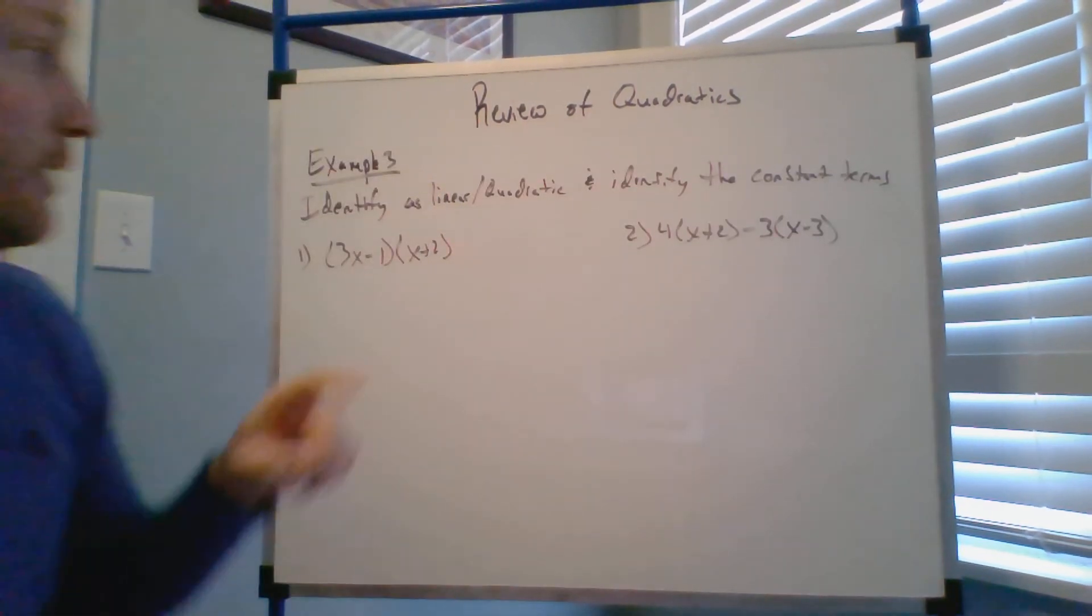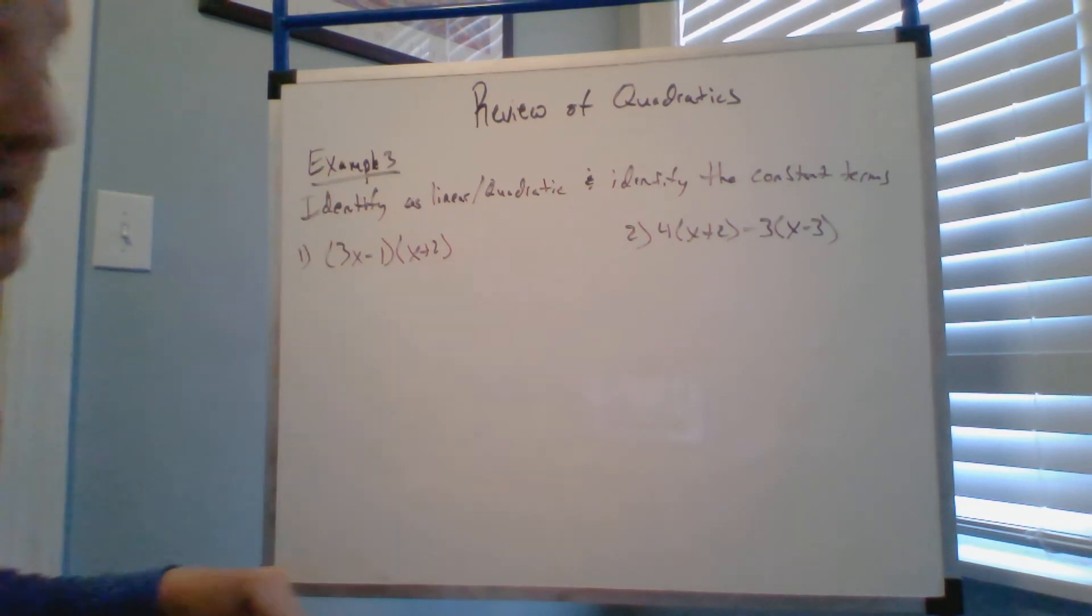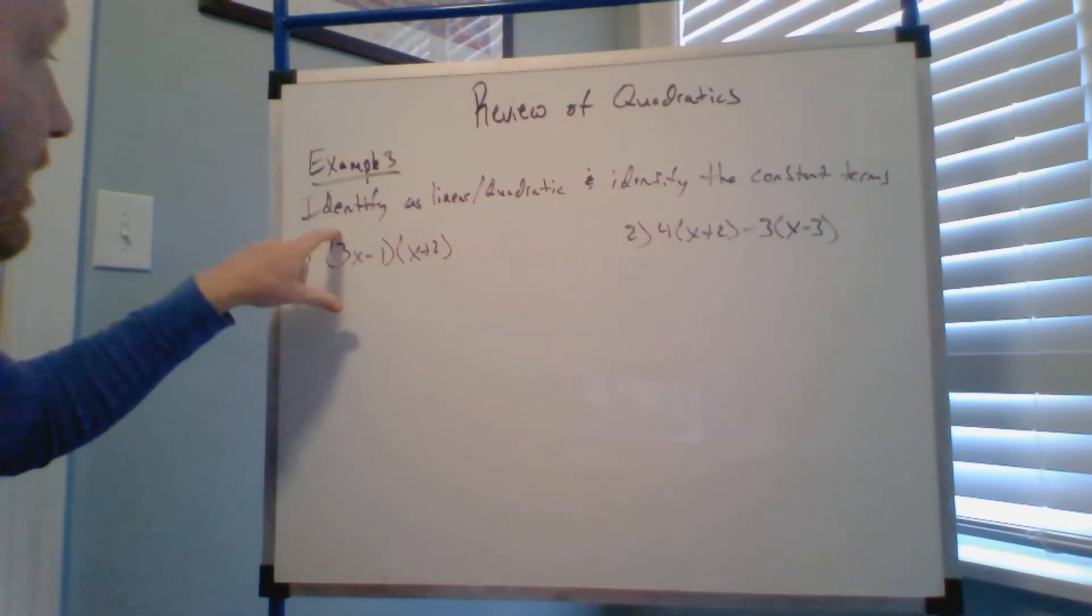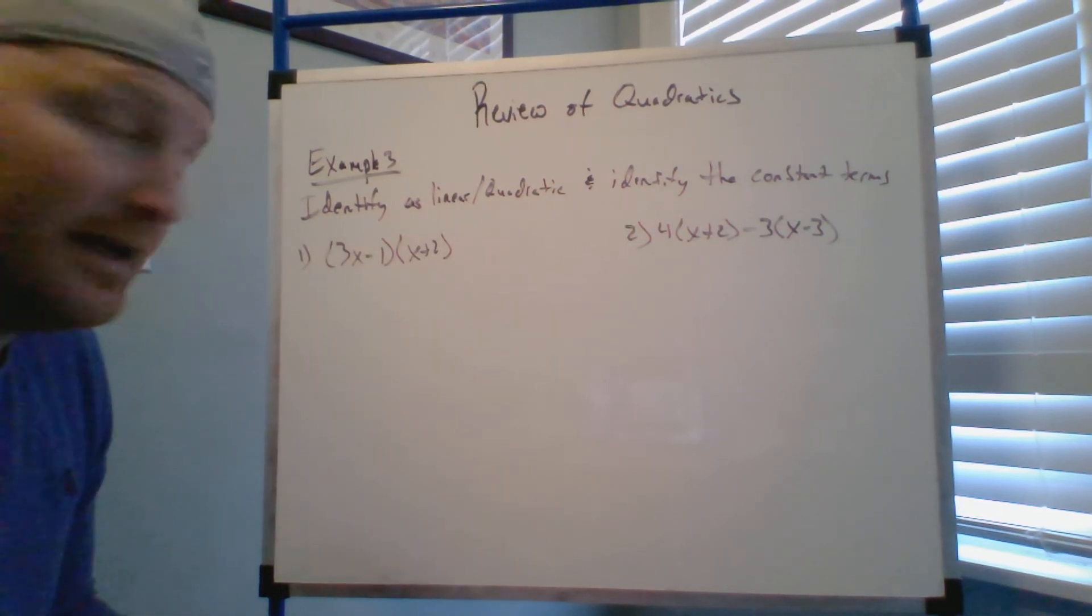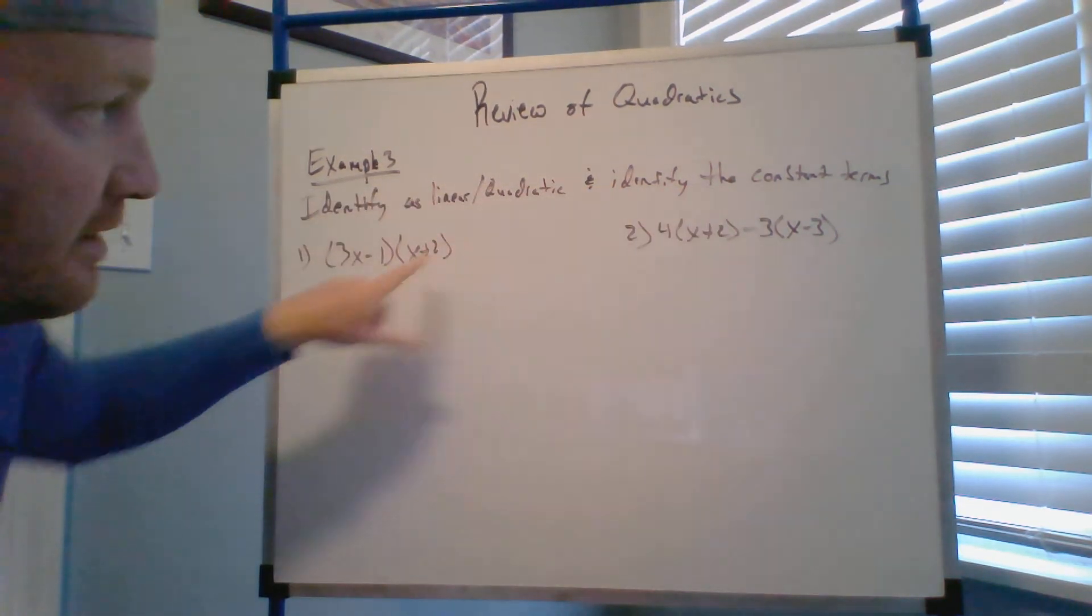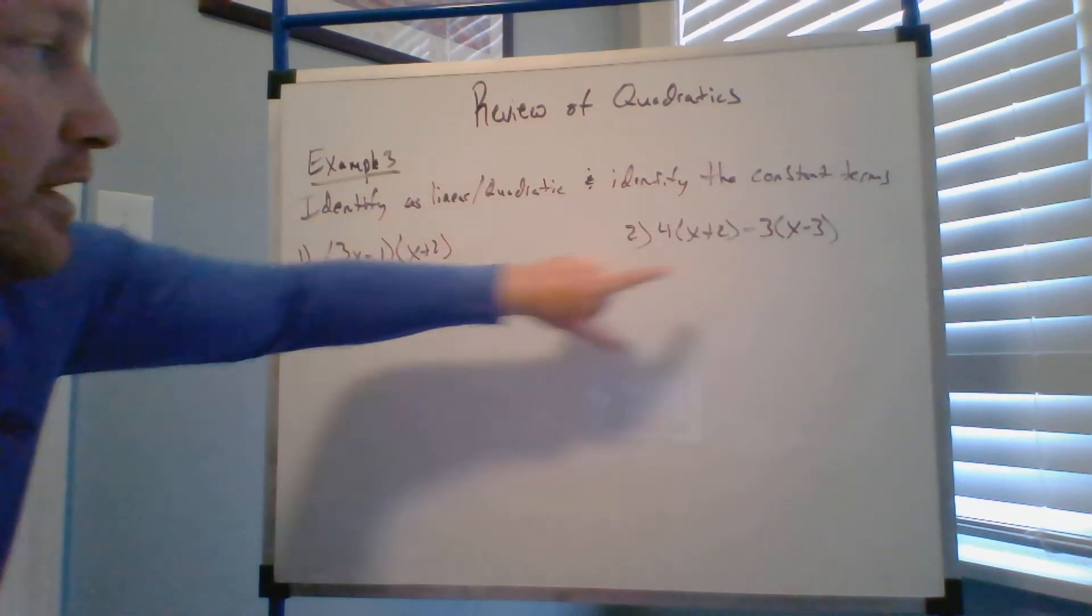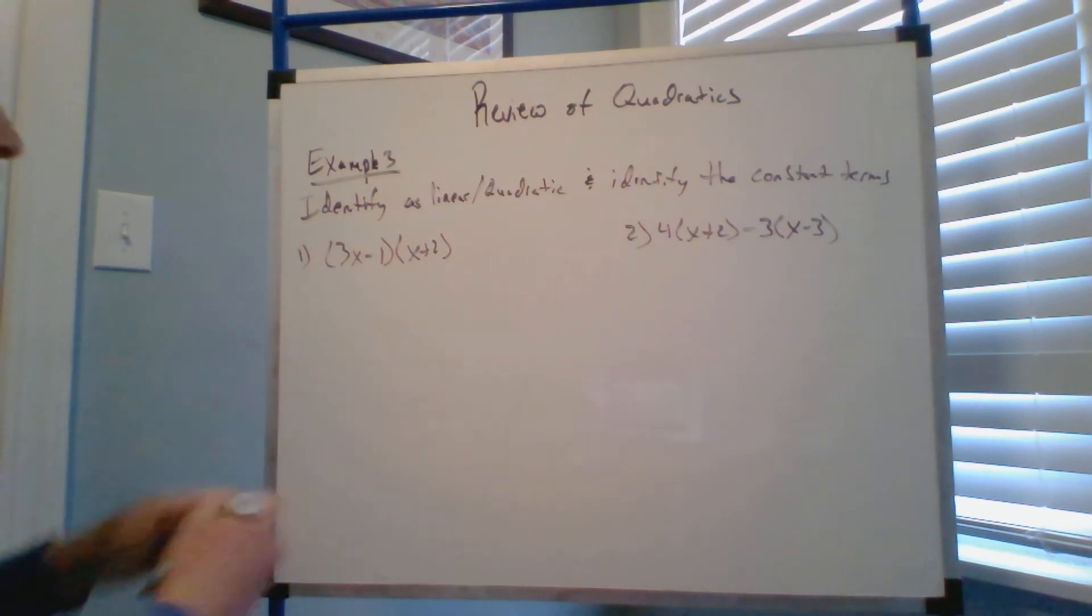All right, so here we go. My third example, this is going to be some stuff that looks like what you'll see on today's work. My instructions say identify as linear or quadratic and identify the constant terms. Now constant term for quadratic is different from the constant term than a linear. Clearly I know this is linear and this is quadratic, and you'll see why because you got to carry out the work.